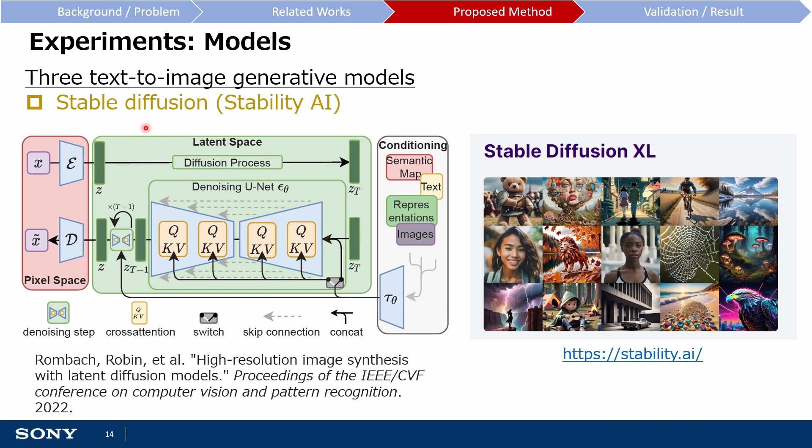The authors evaluate three text-to-image generative models, which means these models receive text prompts as input and generate images as output. I will now briefly introduce each model in turn, beginning with Stable Diffusion. Stable Diffusion is a latent diffusion model, where the diffusion process is run in a lower-dimensional latent space rather than in pixel space, which is good for computational efficiency. You can see some examples of images generated by Stable Diffusion XL taken from the website.